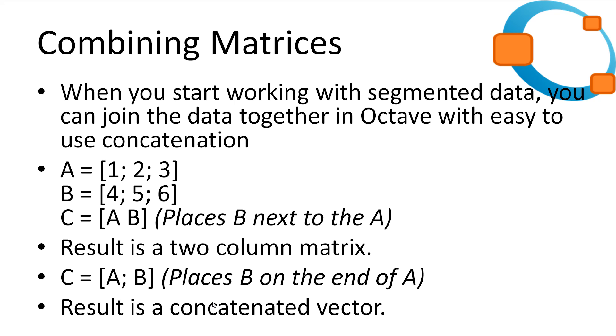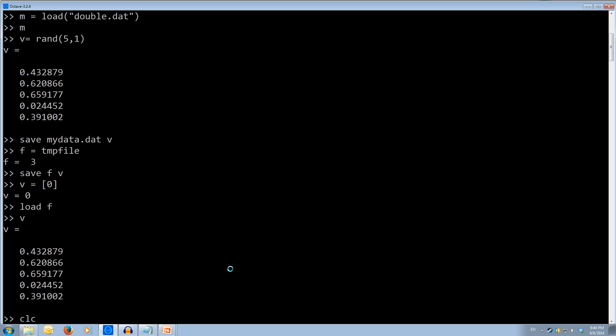So a equals 1 semicolon 2 semicolon 3 and b equals 4 semicolon 5 semicolon 6. And what we're going to do is we're going to merge them on top of each other, so concatenate. Then we can use our c variable and we'll store a and b placed next to each other. So in a column matrix. So we'll come back over to Octave so it's a bit easier to visualize. And we'll just clear the screen.